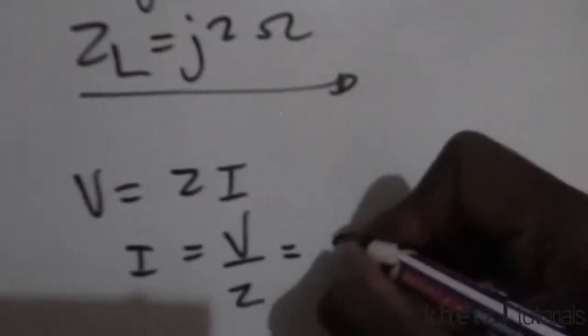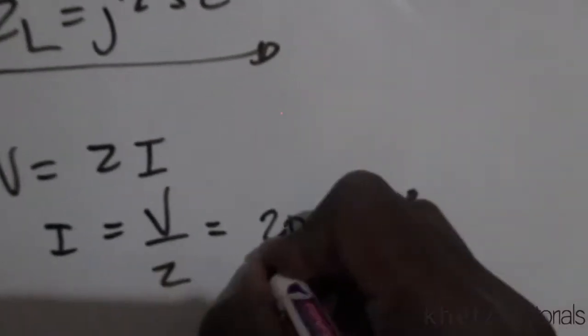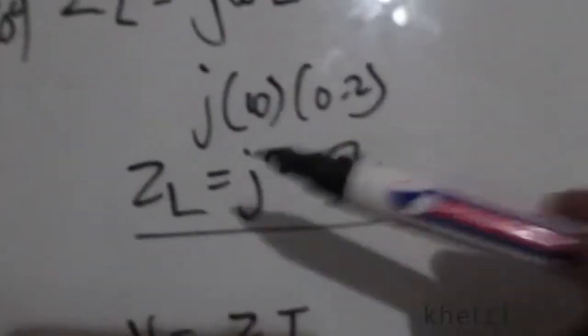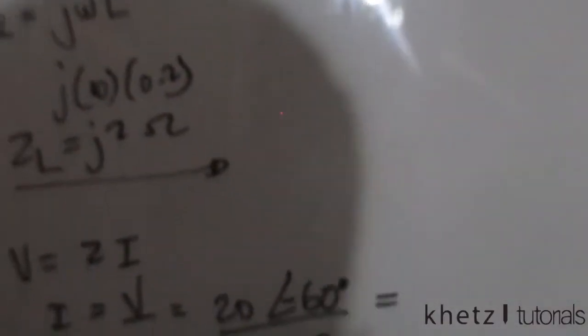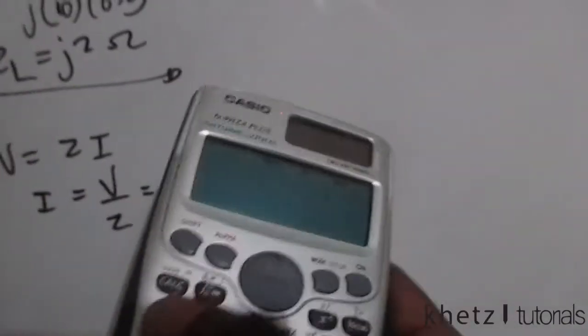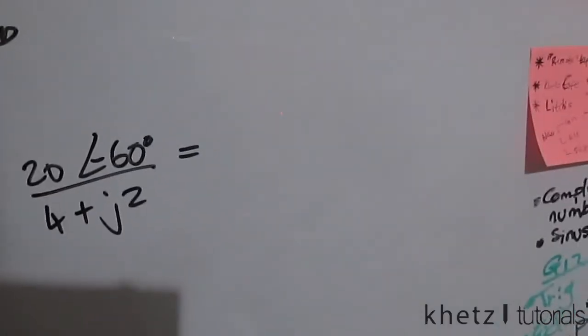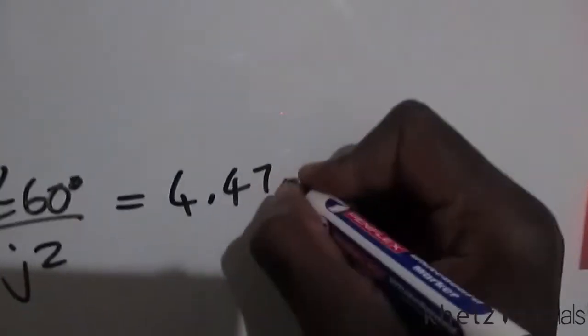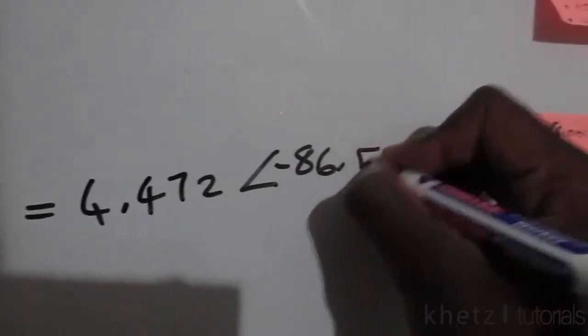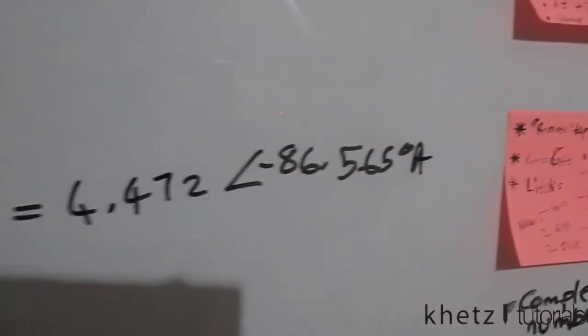Our total voltage is 20 at an angle of negative 60 degrees, divided by the total impedance, which is 4 plus j2. Punching this into the calculator — 20 at negative 60 divided by 4 plus 2j — and transforming to polar form, the answer is 4.472 at an angle of negative 86.565 degrees in amperes.